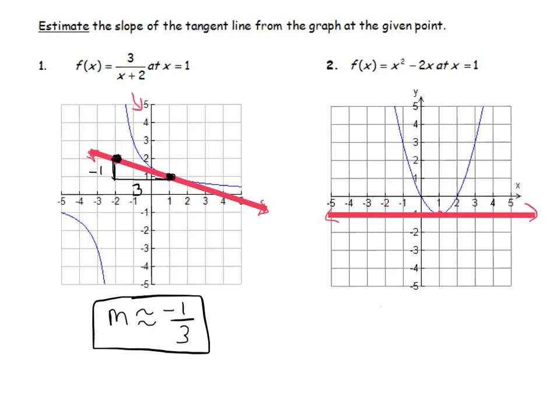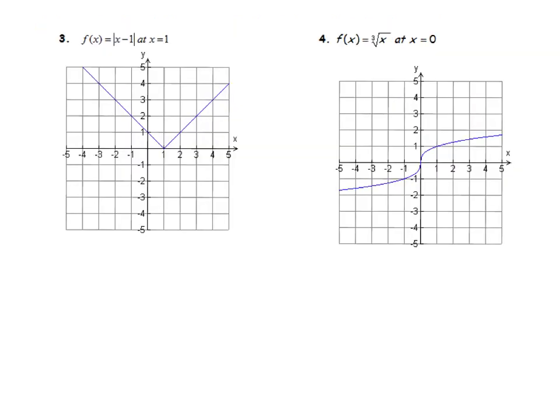No rise, no run, any horizontal line has a slope of zero. And actually I don't even think I need to say 'about' - I think we're pretty sure that that slope is zero. Let's try a couple more.